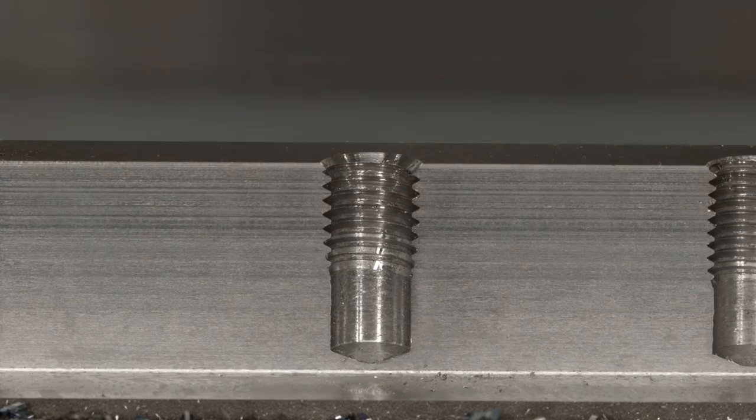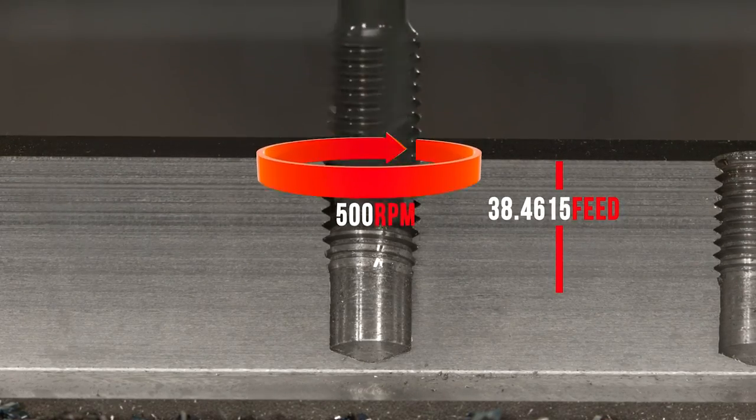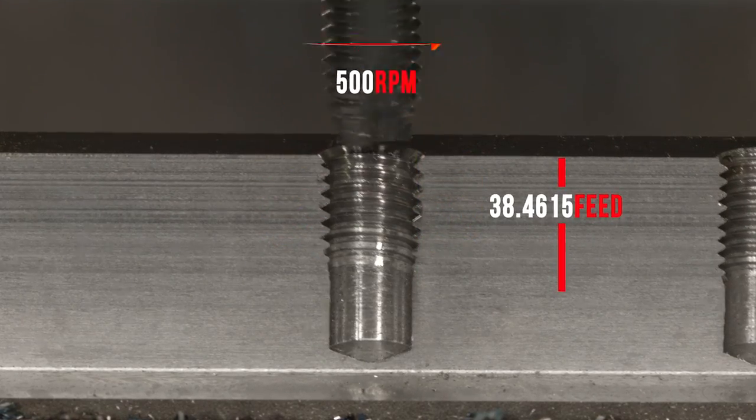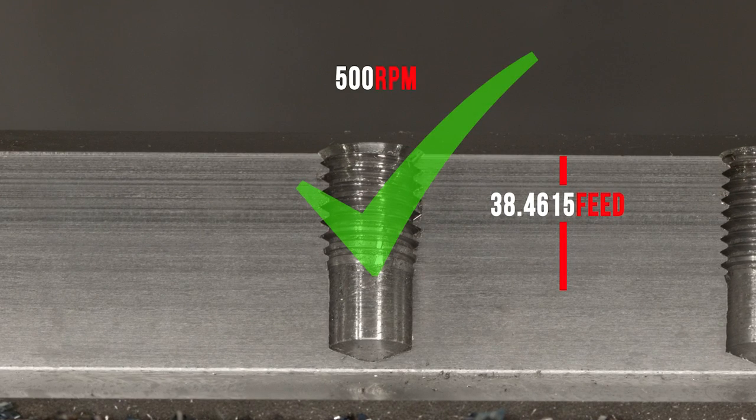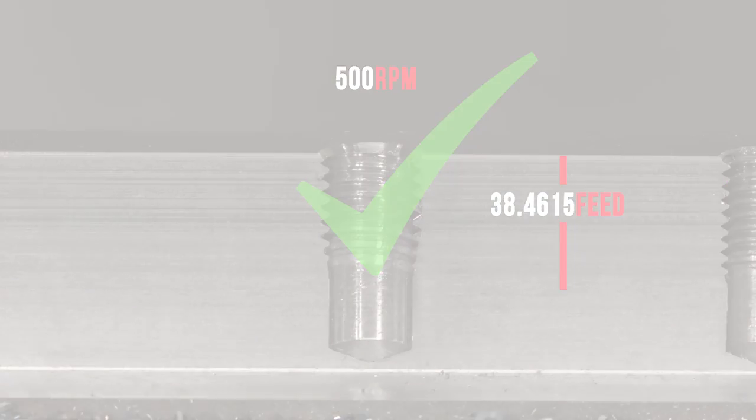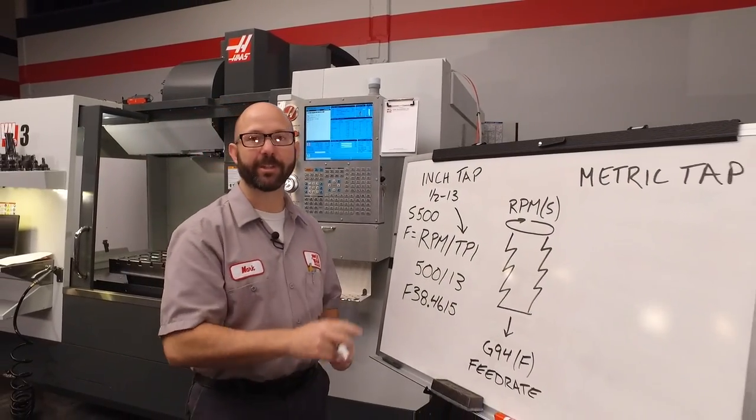We've got our half 13 inch tap threading this hole at 500 RPMs and feeding at 38.4615. That feed rate and the RPM match perfectly to give us our 13 TPI. Well, we covered our inch tap. Let's move on to the metric.